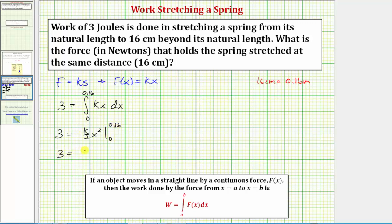So we have three equals k divided by two times, when x is 0.16, we have 0.16 squared, minus when x is 0, we have 0 squared.